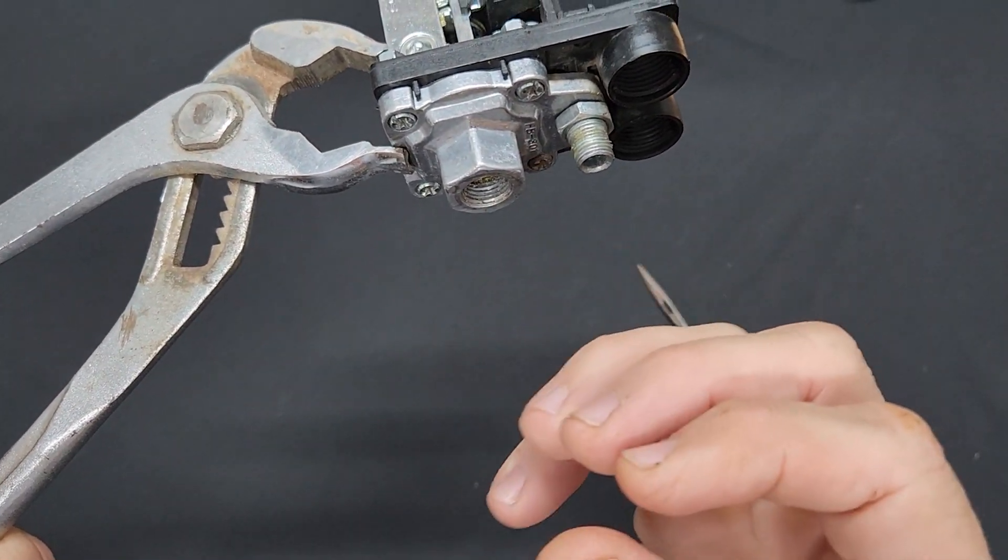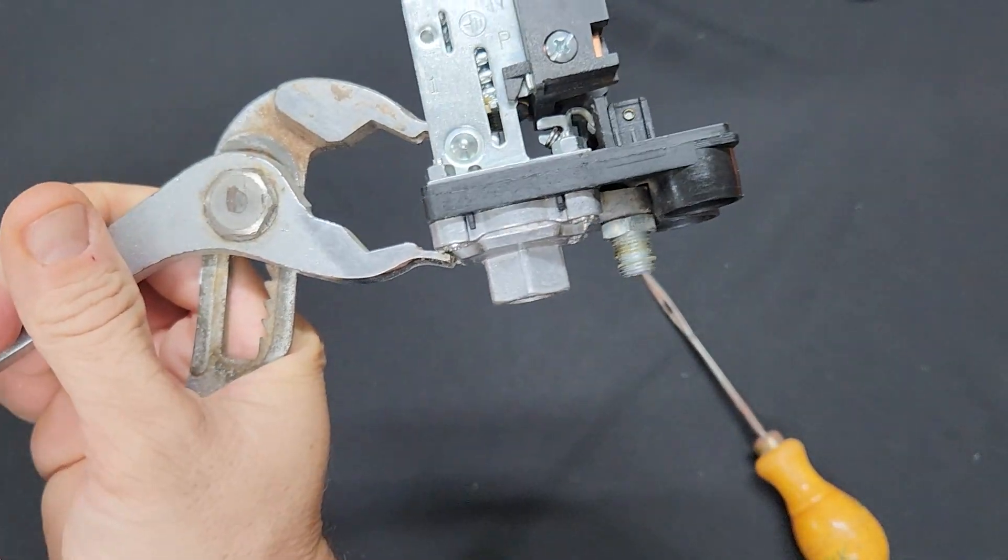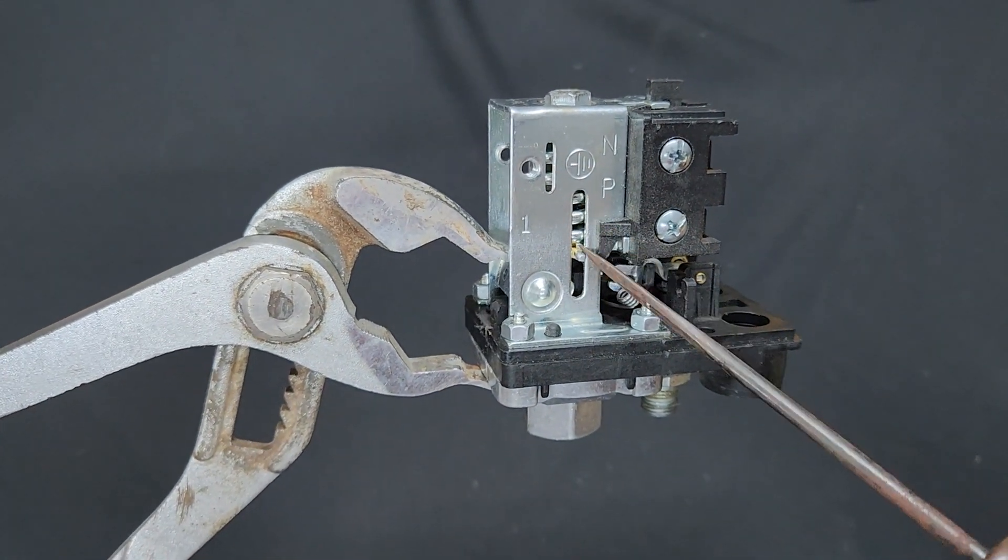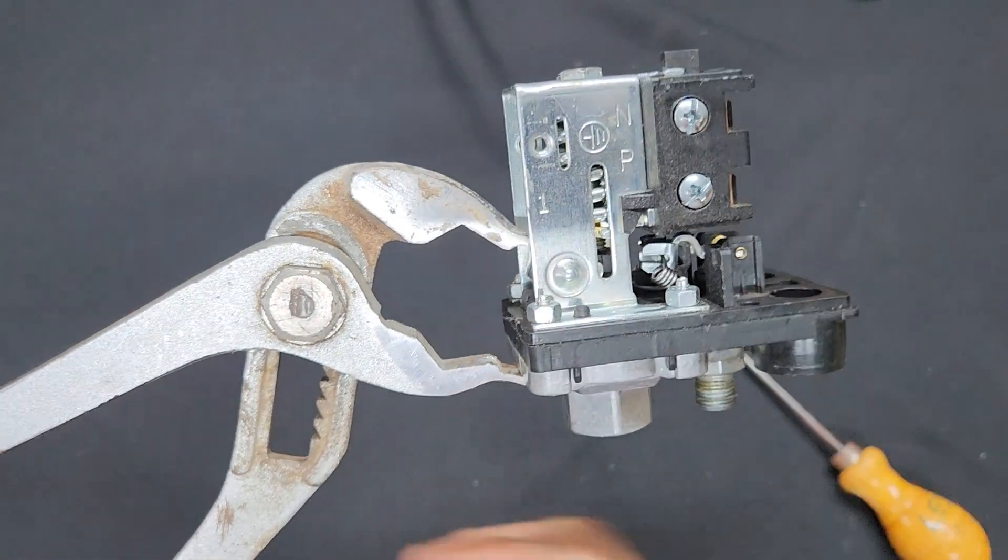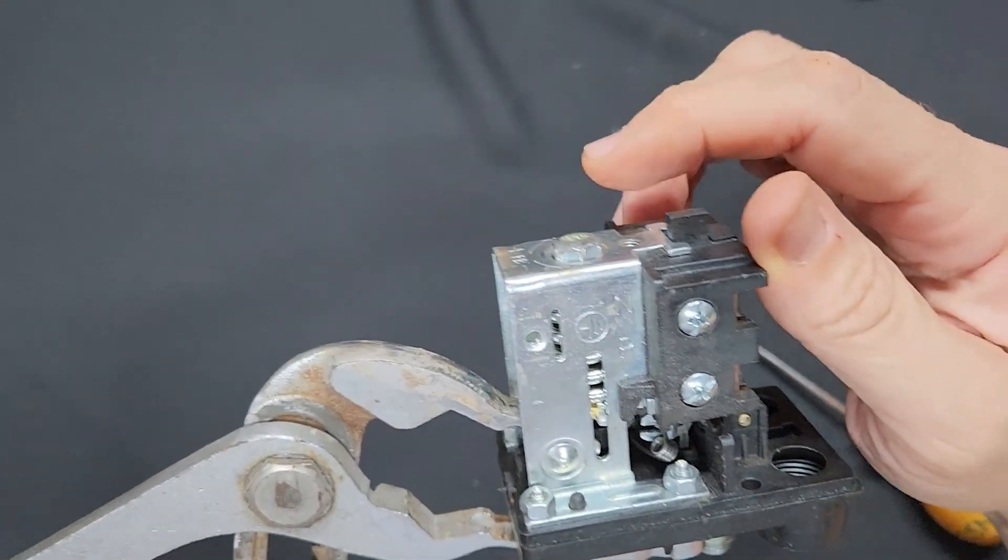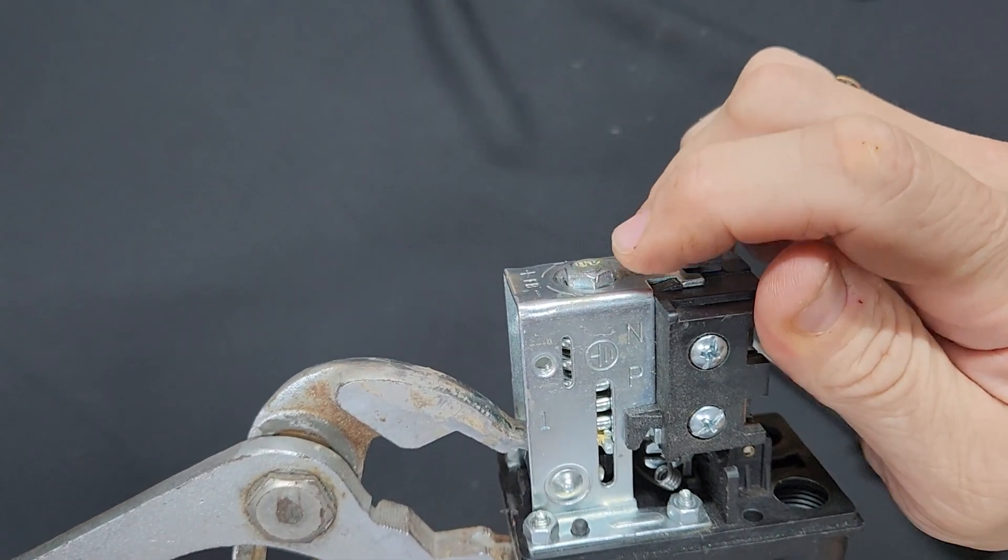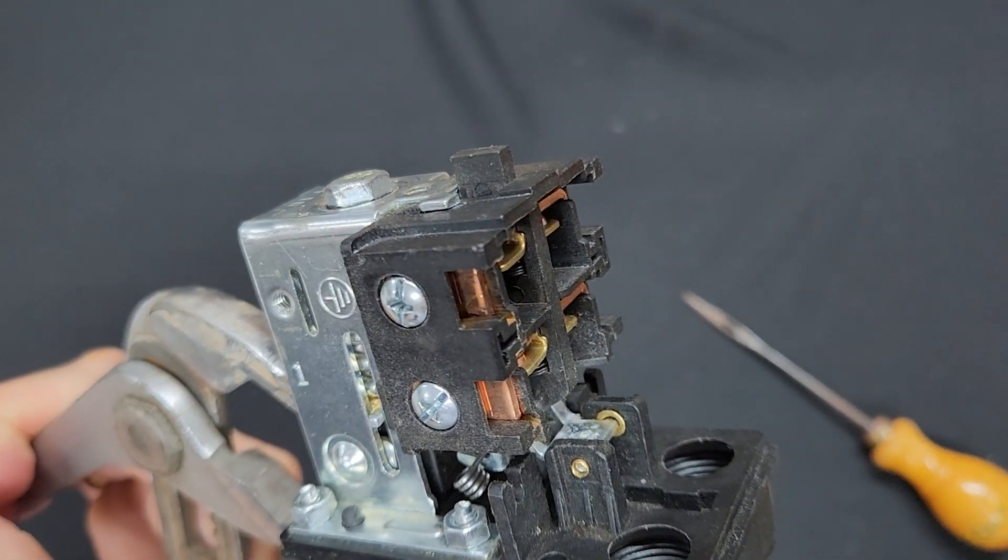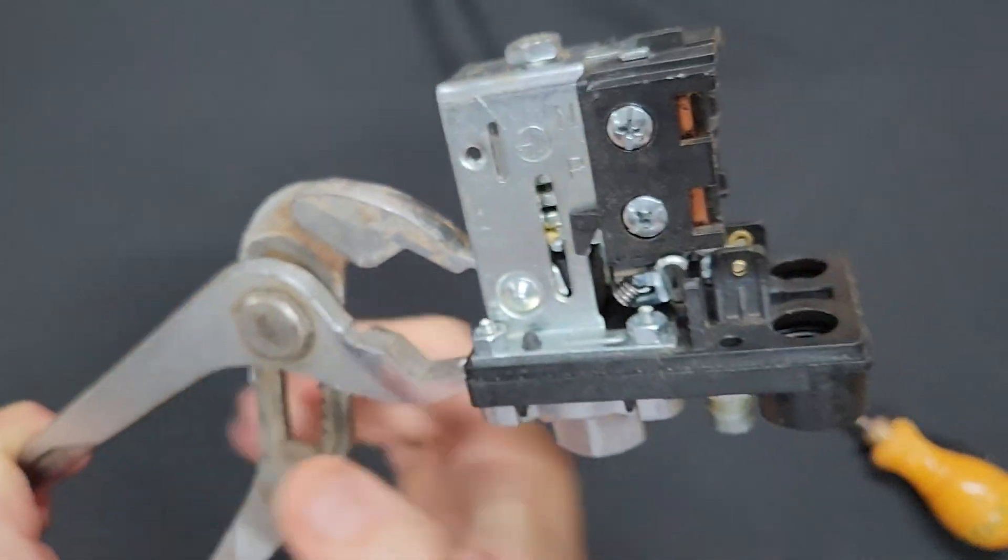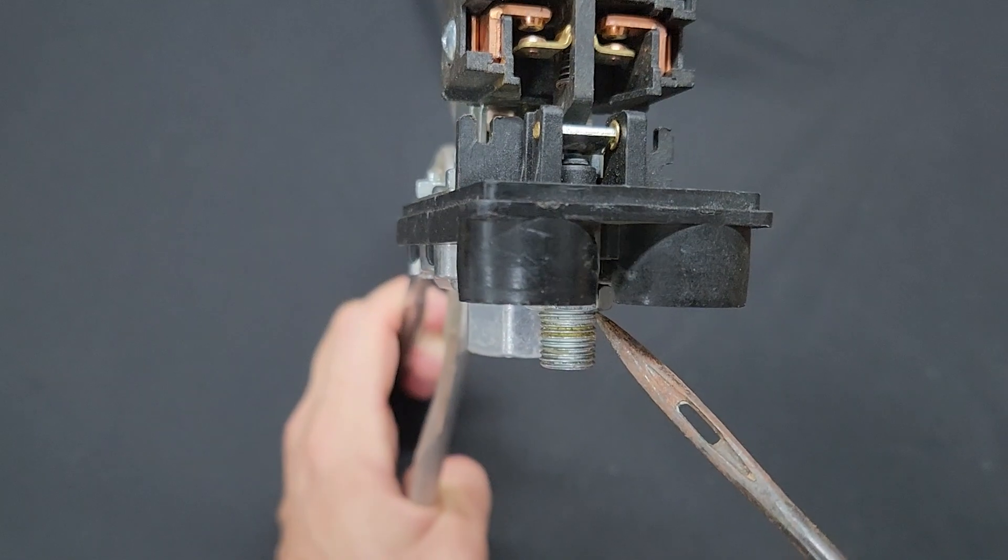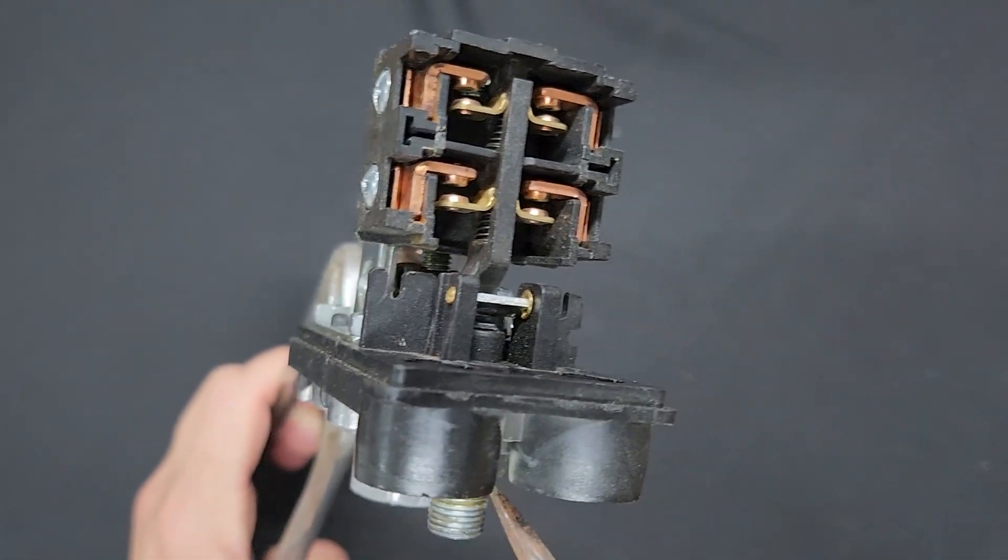And depending on where you have this spring tensioned to, at some point pressure is going to be building, building, building, and this bolt starts to push up, and then finally it's at pressure, it turns the switch off.